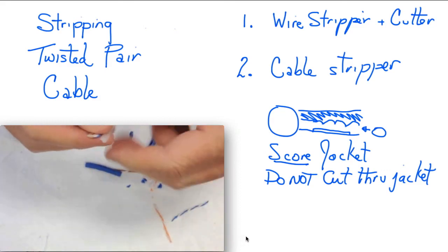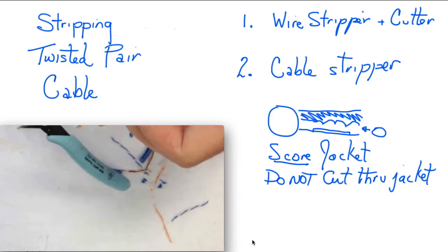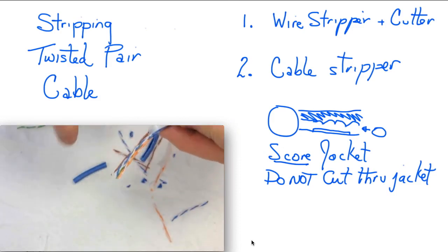And again, we have the ripcord and the strength member, which we can cut back. But what we've got now is a very clean, even cut on the jacket all the way around that we can use for making a crimp connector or for punching down.